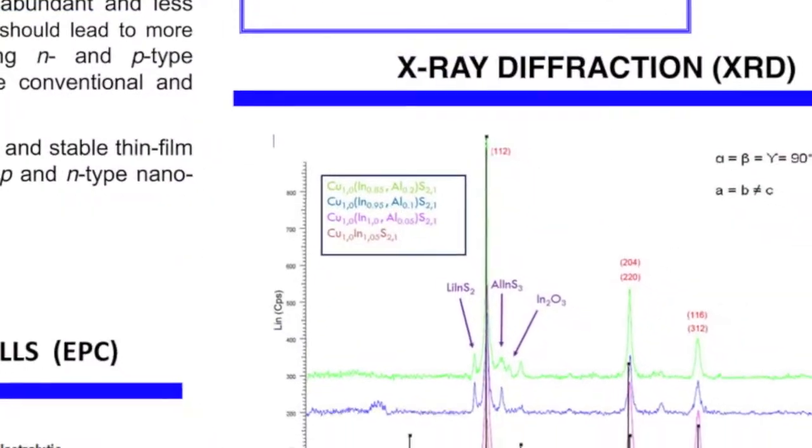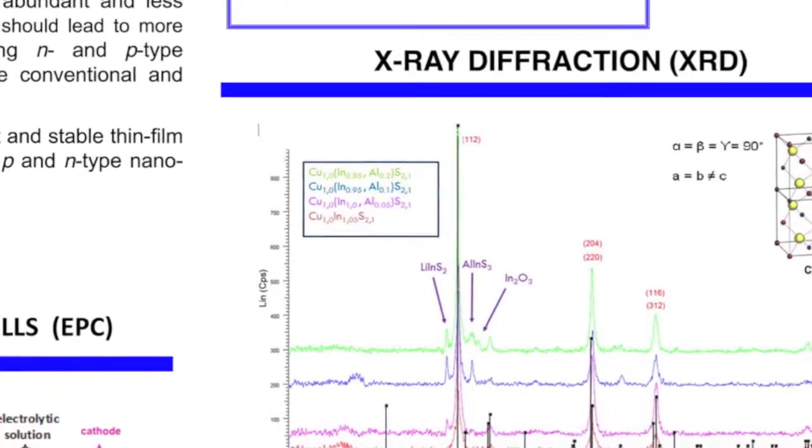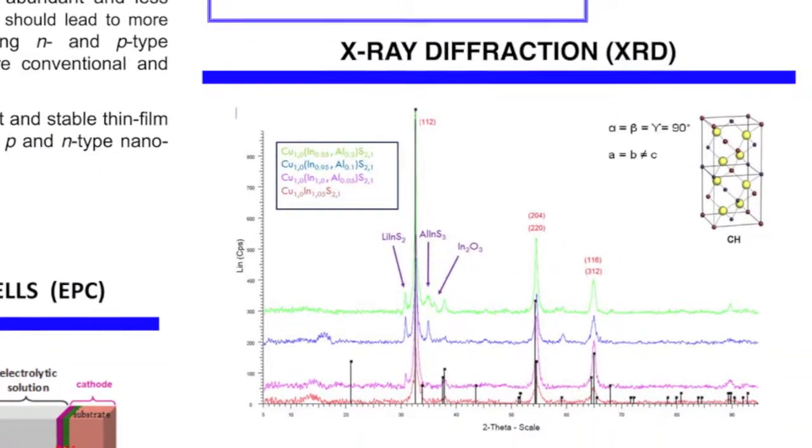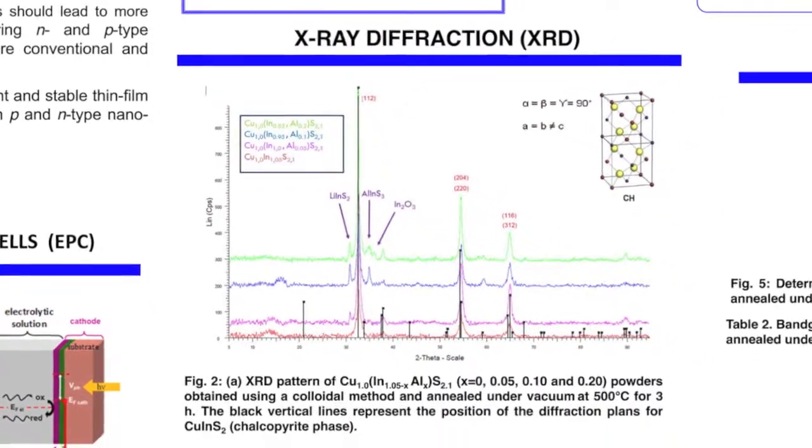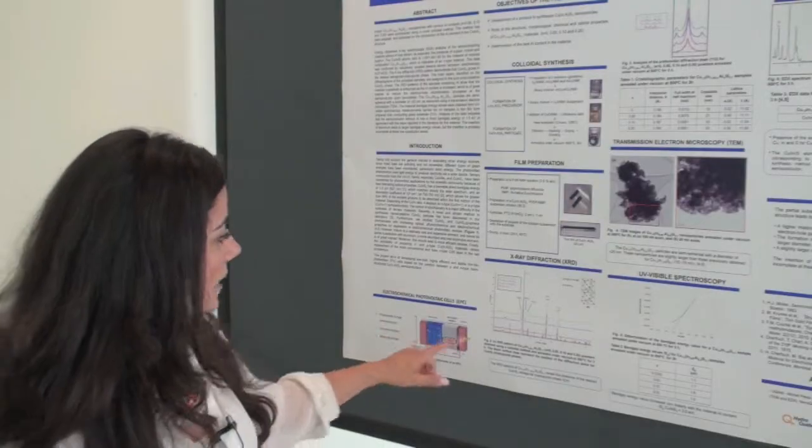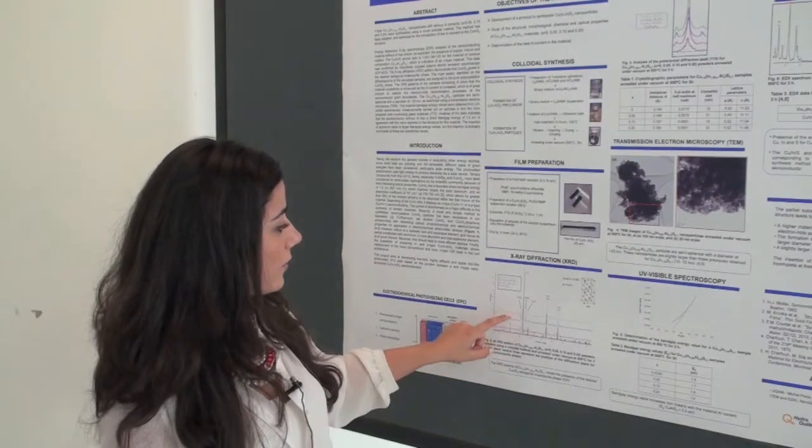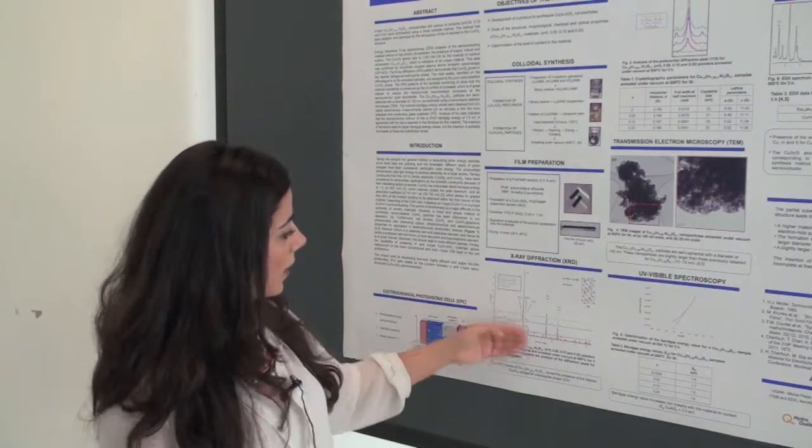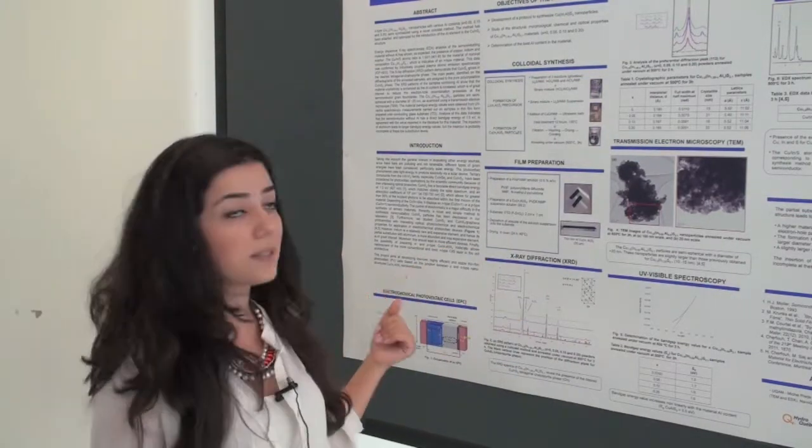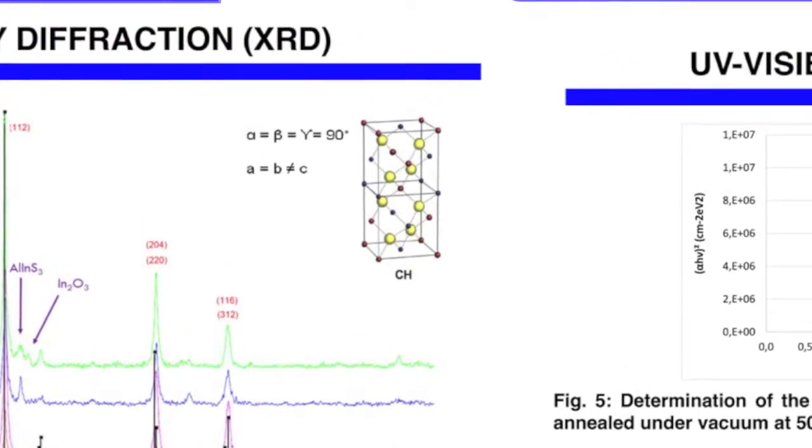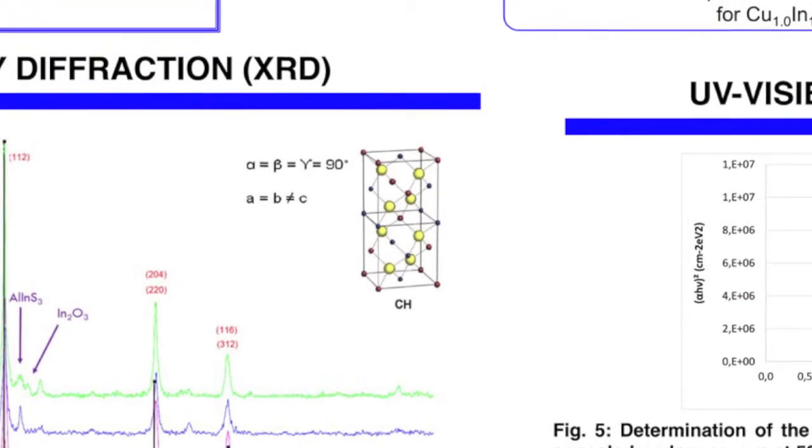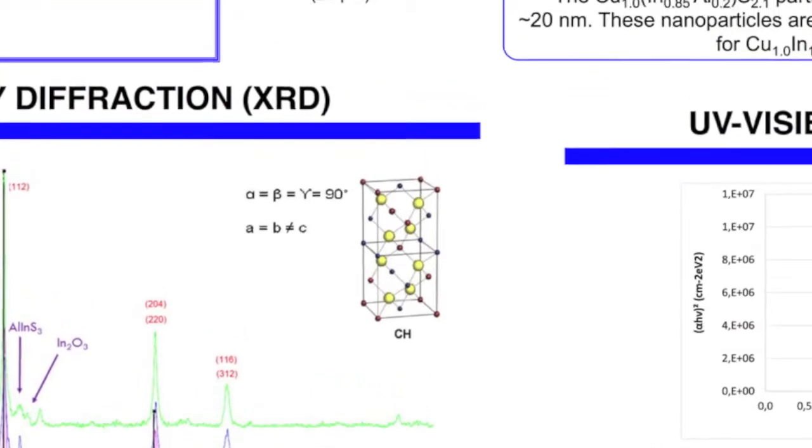The results were very good. Firstly for the X-ray diffraction we've got a higher crystallinity with the aluminum content which is really good. So we can see here 0%, 5%, 10% and 20%. As the concentration of aluminum increases the crystallinity increases and we've got the same tetragonal chalcopyrite structure as its predecessor the CuInS2.